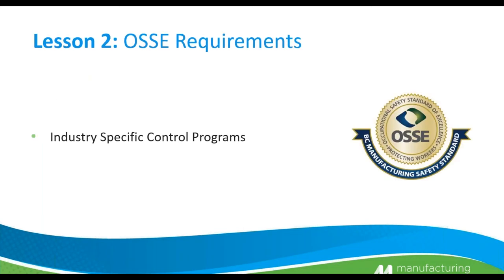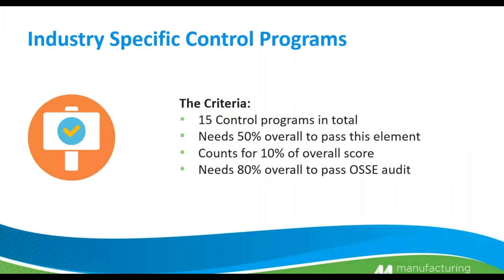Lesson two: the OC specific requirements for industry specific control programs. For the first section, the criteria for OC is that there are 15 control programs or sub-elements in this category. You need an overall of 50% in this element, as with every other element moving forward, and this element specifically counts for 10% of the overall audit. You need an overall of 80% to pass the audit.